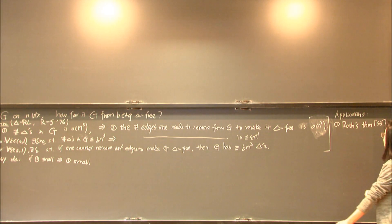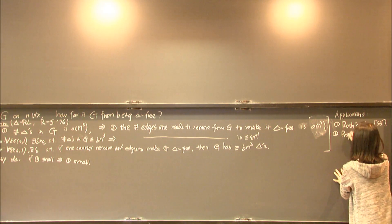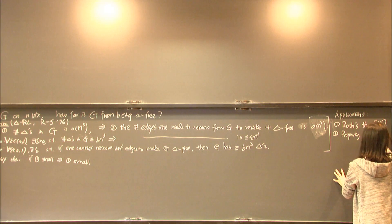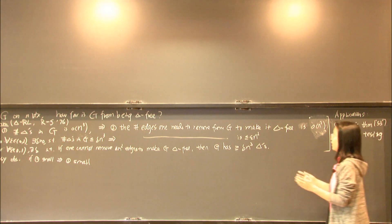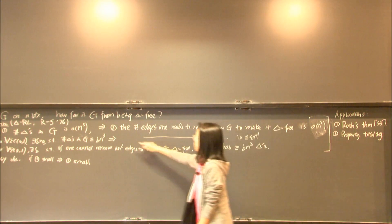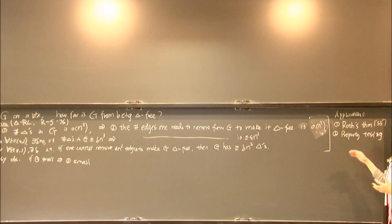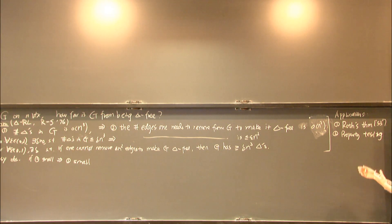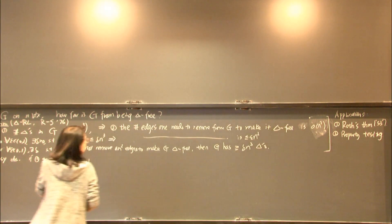A second application is in the field of property testing, a very active area in theoretical computer science. Roughly speaking, the bounds in the triangle removal lemma — or the general graph removal lemma — give the fastest randomized algorithm to test whether a graph has certain properties.